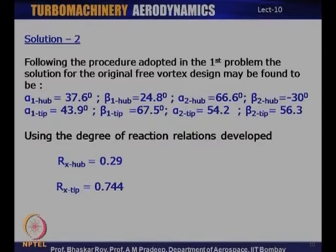The degree of reaction in this problem was prescribed at the mean. The free vortex degree of reaction at the hub is 0.29, which is a good value, and at the tip it is 0.744, also a good value. Both are safe values at hub and tip. Now we need to recalculate these values using the exponential law.